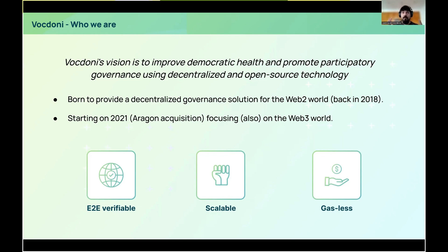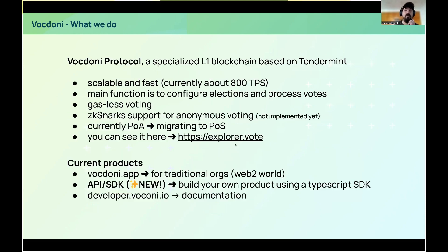With all of this, we aim to provide a secure, transparent, and decentralized alternative to traditional voting systems, and on top of that, in a cheaper way. At Vocdoni, we developed the Vocdoni protocol, a specialized L1 blockchain based on Tendermint. It's scalable and fast.